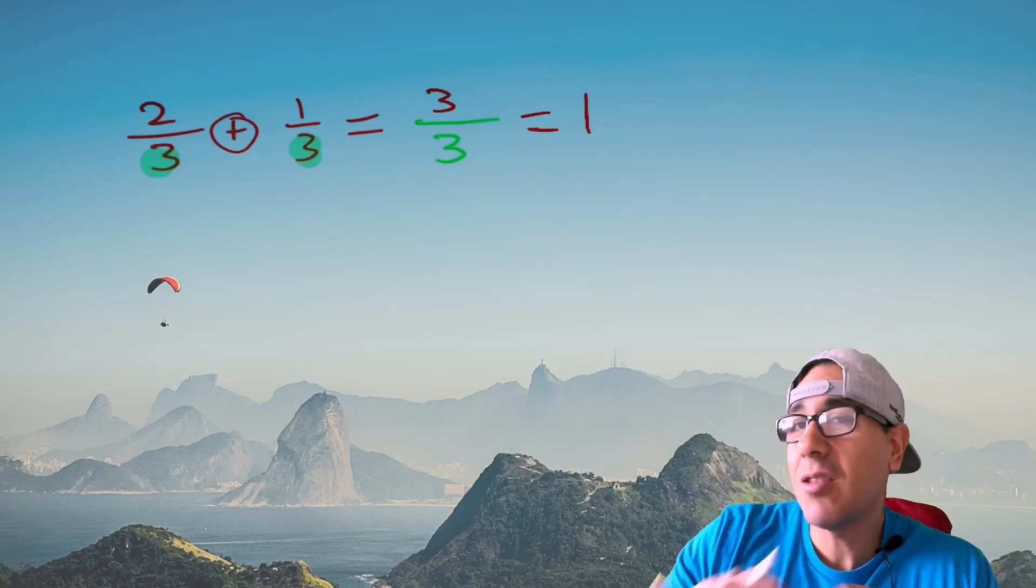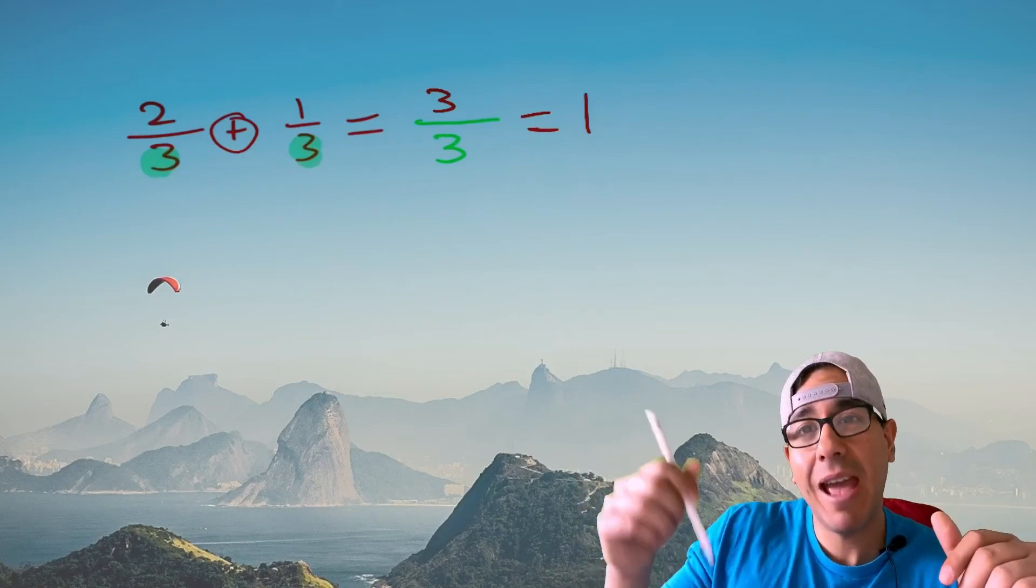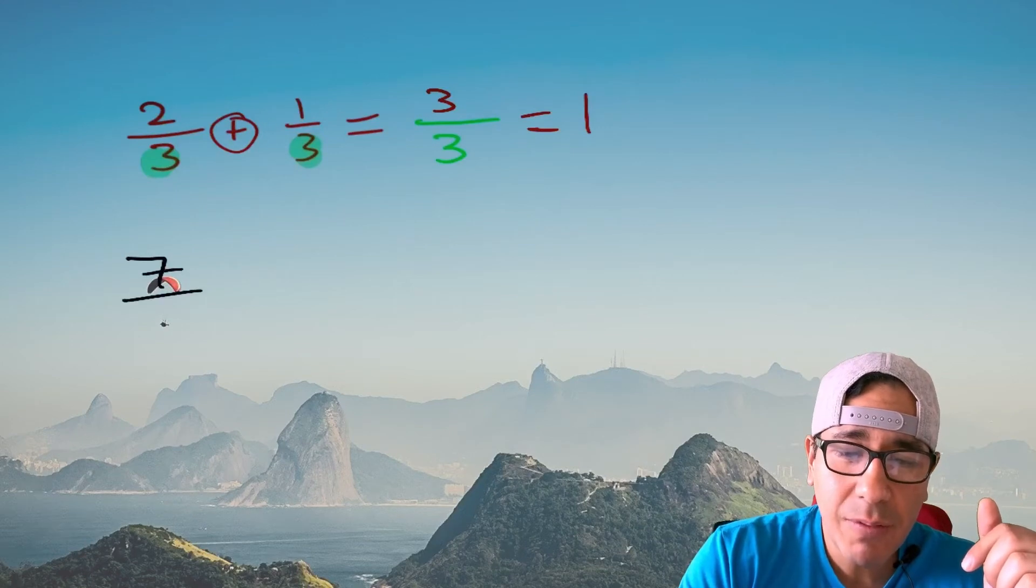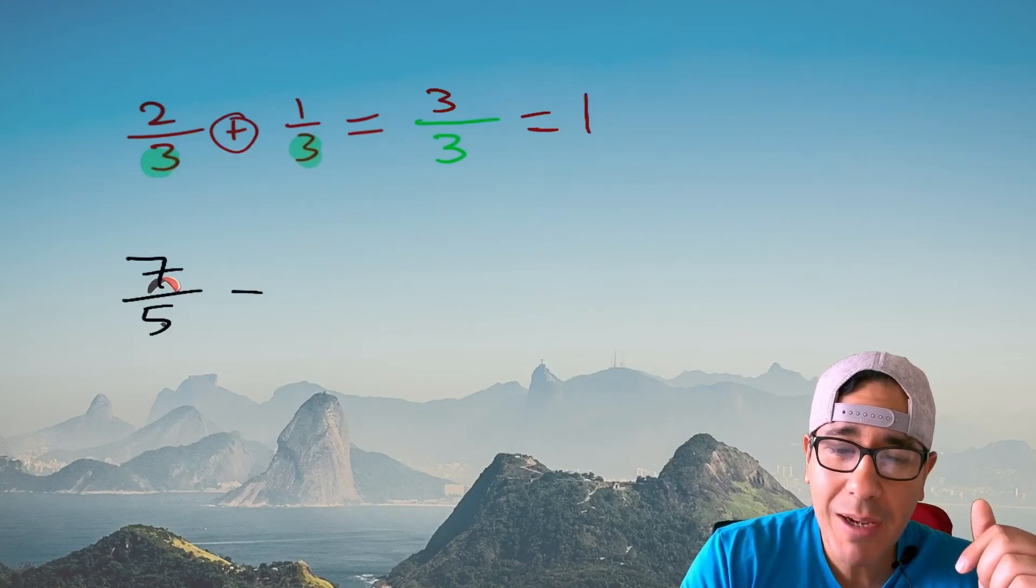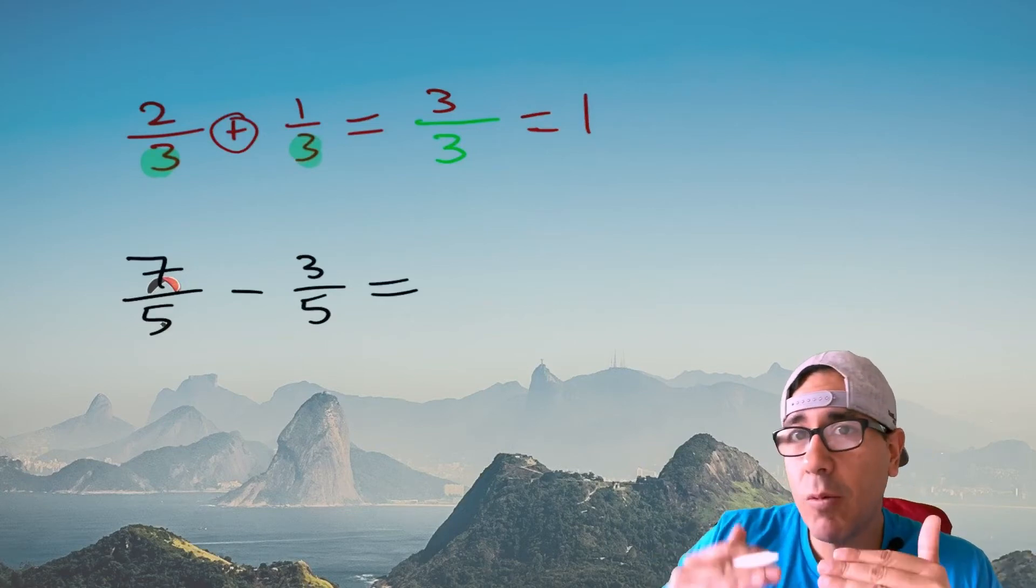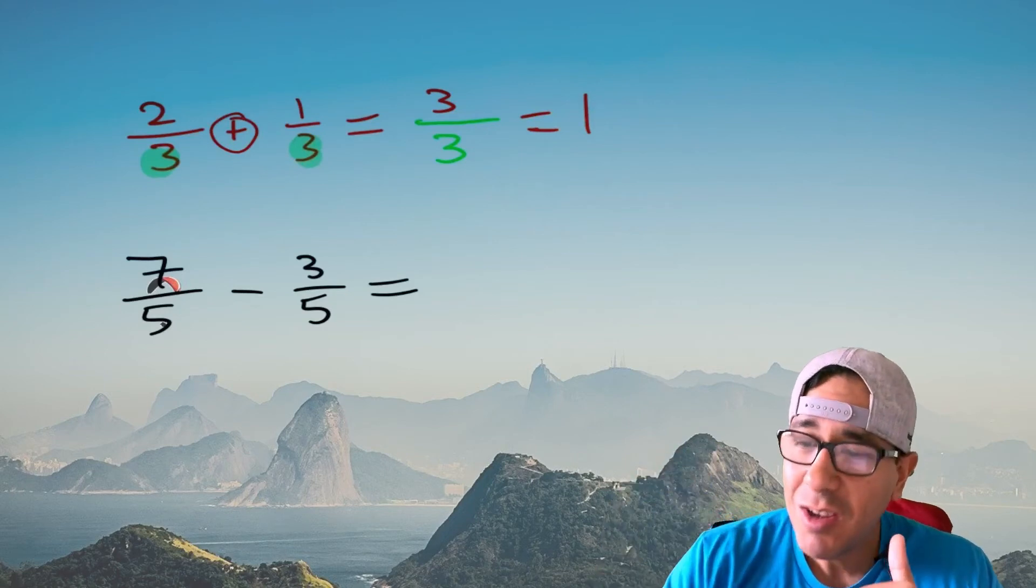Multiplying and dividing that's a whole different story but today we're talking about adding and subtracting. Let's look at subtracting. Let's go with seven over five minus three over five.